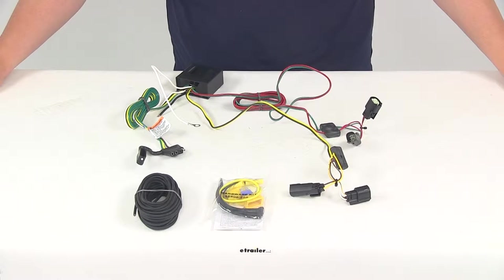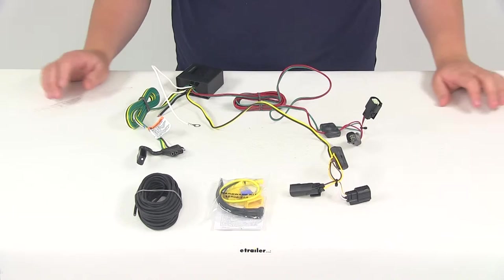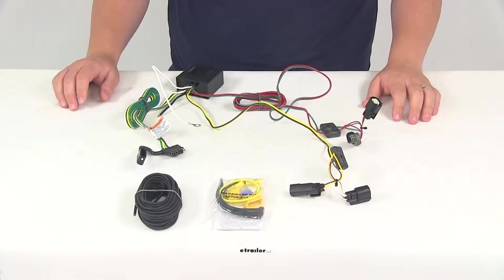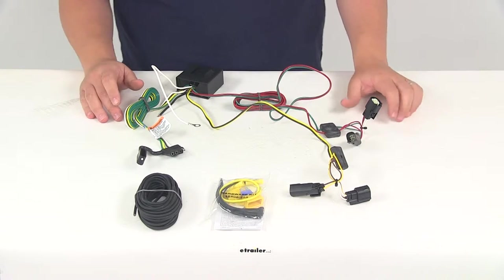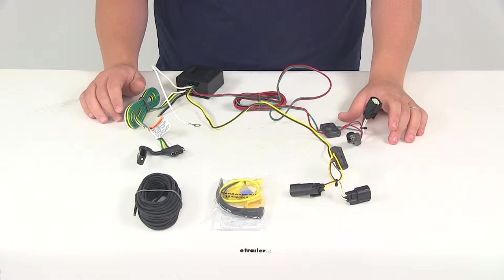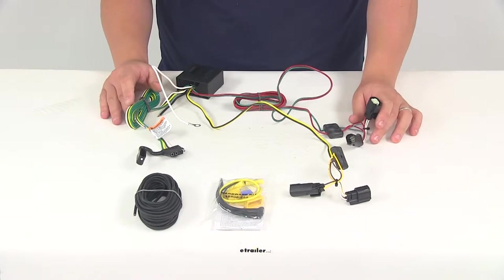Today we're going to be taking a look at part number 118566. This is the T1 vehicle wiring harness from TowReady. This wiring harness is designed to fit all models of the Ford Escapes beginning with year 2013.